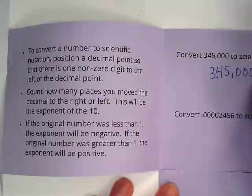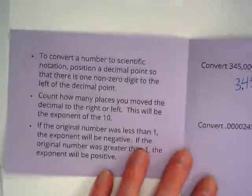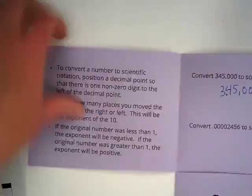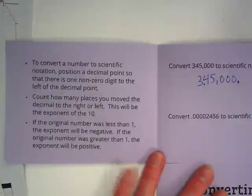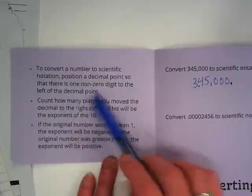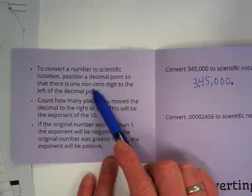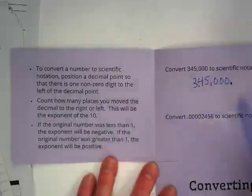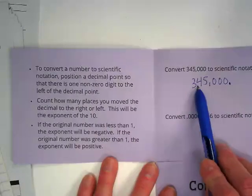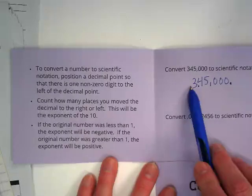They're always at the end of a number, right? So the first direction, let me zoom out so we can see both sides of this a little bit better. To convert a number to scientific notation, position a decimal point so there is one non-zero digit to the left of the decimal point. That's why I want this here because I want to have just one number to the left of the decimal point.